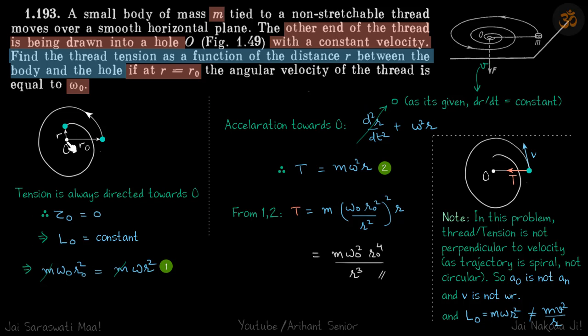And when it is at a distance r, let's say the angular velocity is omega, so new angular momentum will be m omega r square. Now we don't know omega.